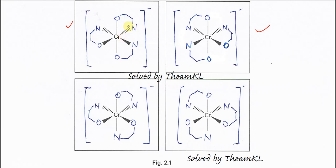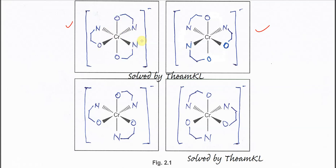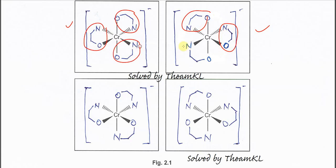First, draw all the oxygens and nitrogens — they are all in the same plane. Once you draw this isomer, draw its mirror image, making sure the positions are correctly followed. These two are mirror images that are non-superimposable.